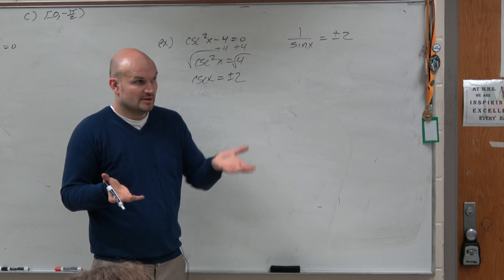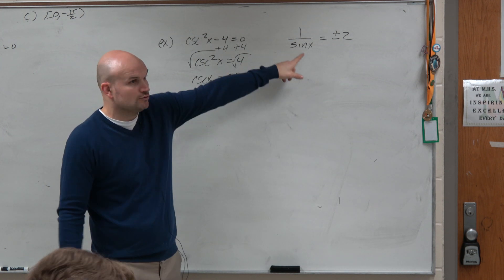No? Yeah? You guys OK with that? Yeah. I mean, it was written on the board just not too long ago. Cosecant equals 1 over sine.